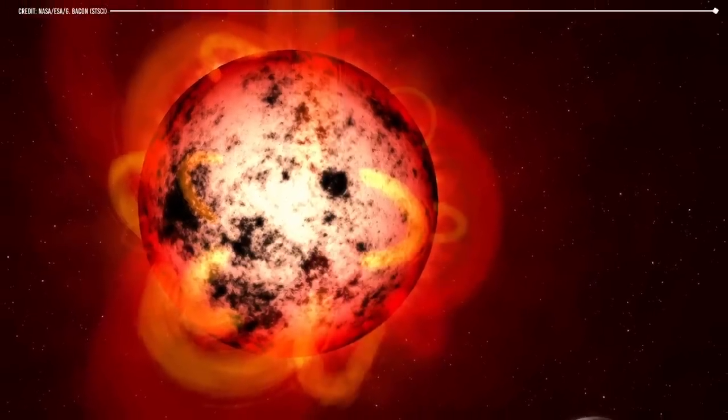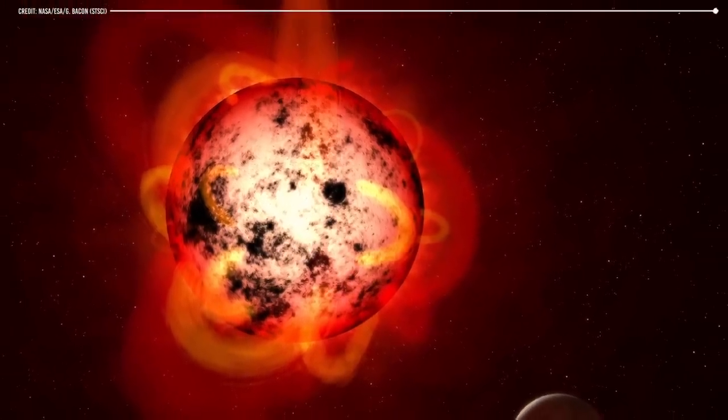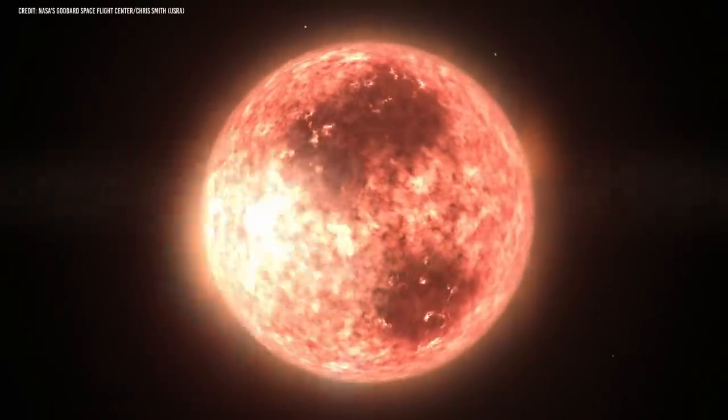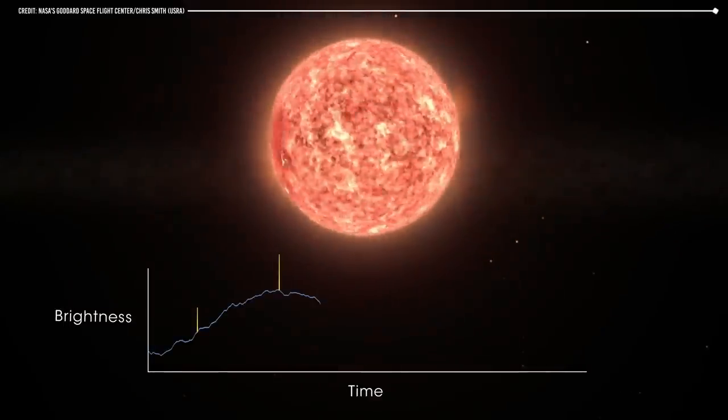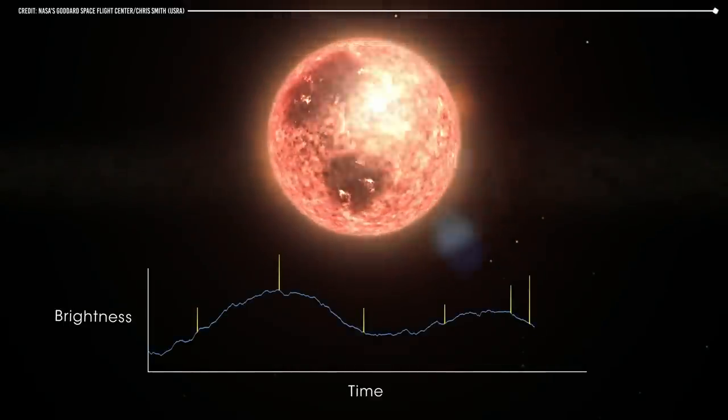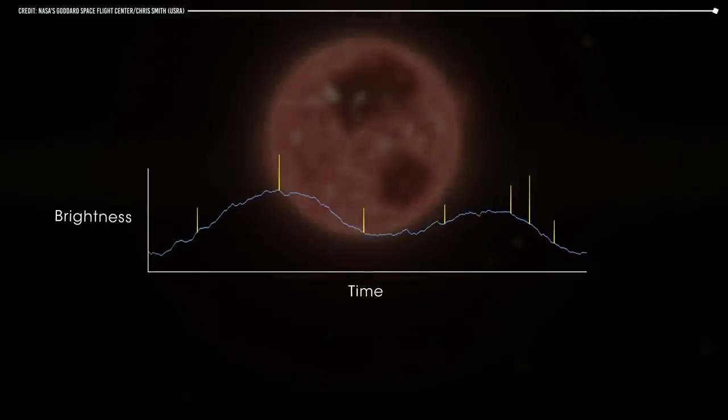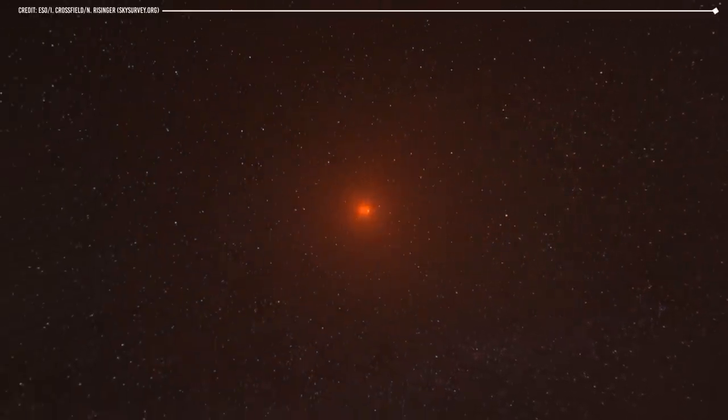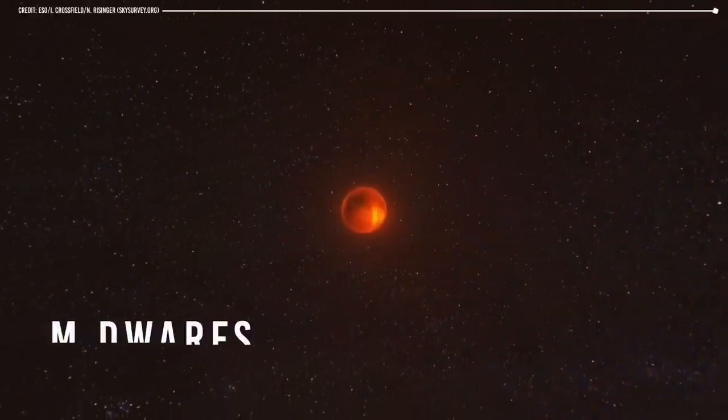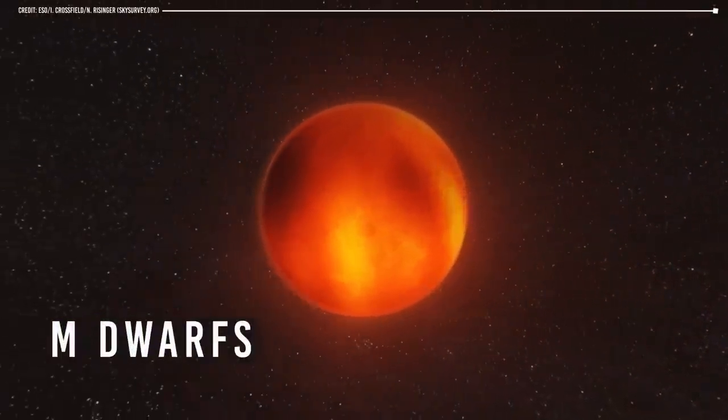Red dwarfs get their name from their color, which is reddish in appearance. This is because they emit most of their light in the infrared part of the spectrum, rather than in the visible part of the spectrum. Red dwarfs are also known as M dwarfs, as they are classified as type M stars based on their spectra.